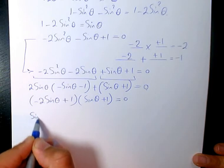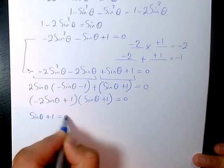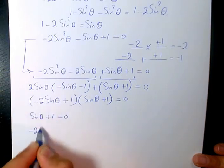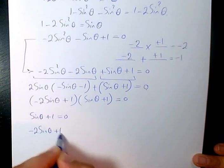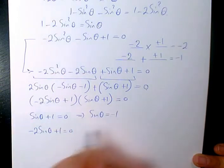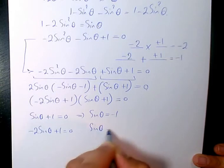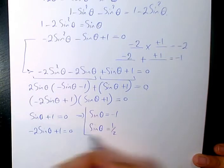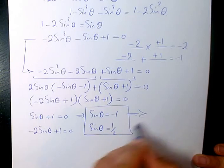Now I have it in completely factored form. We have two scenarios: one when sine theta plus 1 is 0, and the other one when negative 2 sine theta plus 1 equals 0. Sine theta equals negative 1, and sine theta equals 1 over 2.